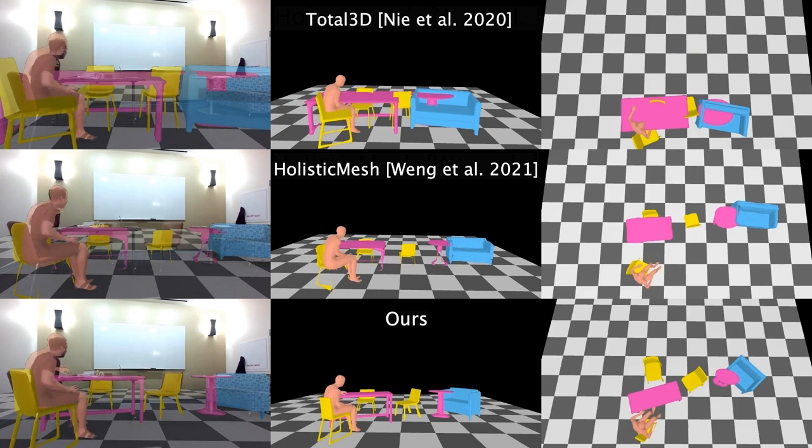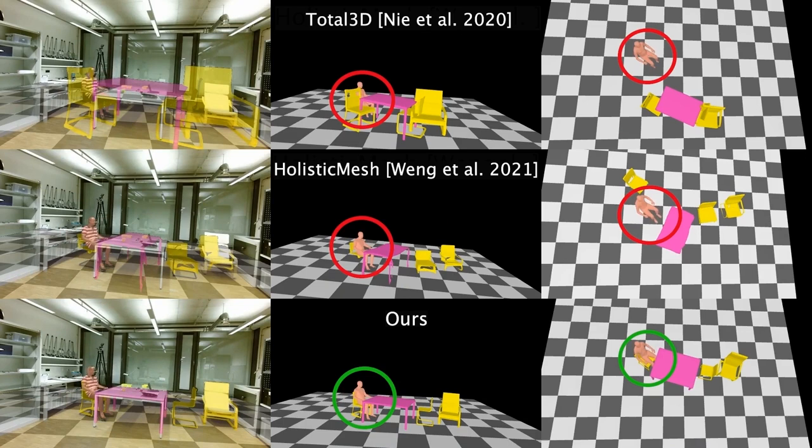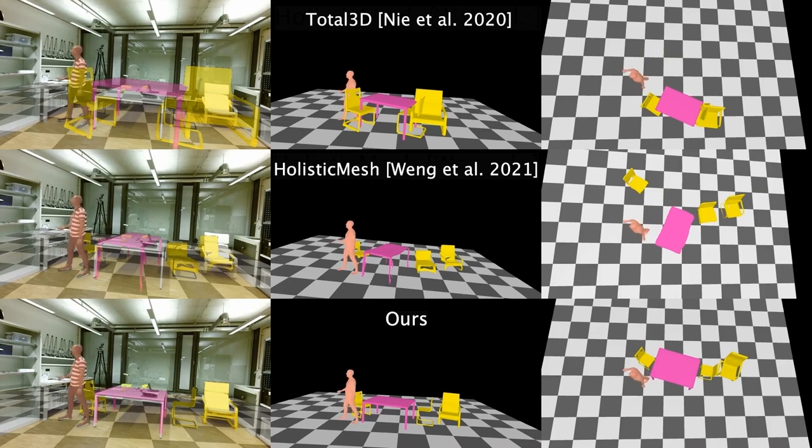In contrast, our method leverages contact constraints, depth constraints and free space constraints with no object contact, to estimate more accurate and realistic 3D scene layouts where humans interact in a more physically plausible way.